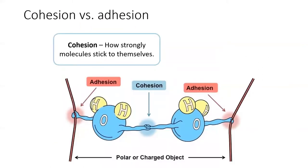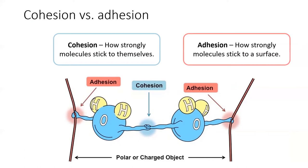Cohesion is a measure of how well the molecules stick to themselves. If there are lots of favorable intermolecular forces between the molecules, then they will have a strong cohesive force. On the other hand, adhesion measures how well molecules will stick to a surface. If the molecules and the surface have lots of similar IMFs, then they will have high adhesion.